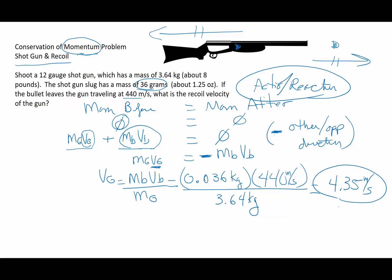Now when I do that, I end up with a recoil velocity of 4.35 meters per second. That's going to be the recoil velocity of the gun, the velocity of the gun. And just be aware that's in the opposite direction that the slug is moving due to that vectorness of momentum.